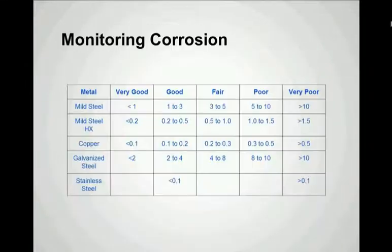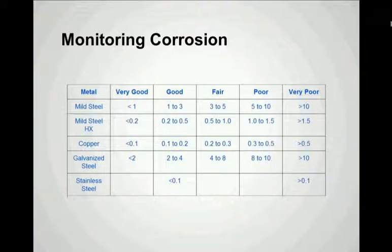Once that test is completed, we can compare the results to a chart that expresses results in mills per year and rates them as very good, good, fair, poor, or very poor. It's a good way to evaluate the performance of the system with regard to corrosion by actually being able to quantify the corrosion rate based on the type of metal we're concerned with.